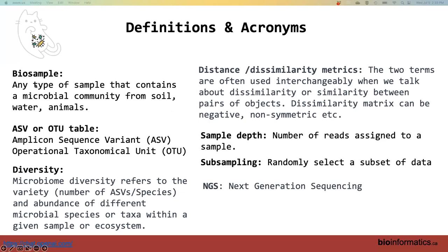Some definitions: a biosample can be anything — soil, animal, water — anything that has a community in it. ASV stands for amplicon sequence variant, OTU for operational taxonomic unit. In simple terms, it's what you get out of doing the lab work — a table with abundances and a sequence. That sequence is region-specific (V3, V4, V6, etc.) and is used to assign taxonomy, sometimes to species level, sometimes only to genus or family. Diversity refers to the variety and abundance of species in an environment.